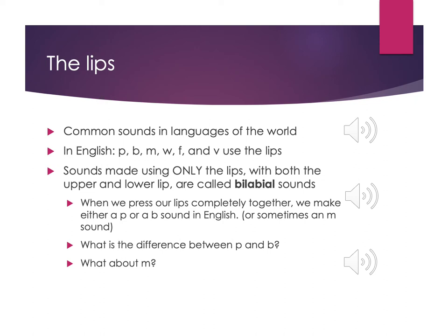M is also made as a bilabial sound — we're putting our lips together. But what's different about M is that the air comes out of our nasal cavity. So we're closing our lips, but rather than opening them like with P or B, we keep our lips closed and let air flow through our noses instead, through the nasal cavity. The air is coming out of your nose as opposed to your mouth.